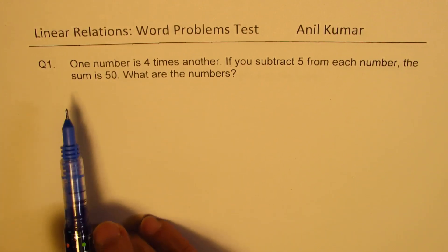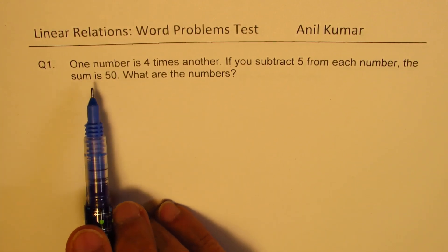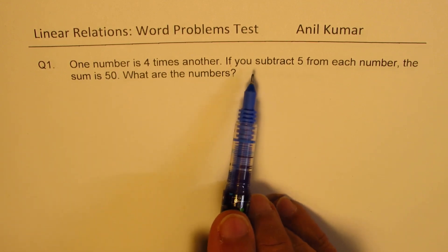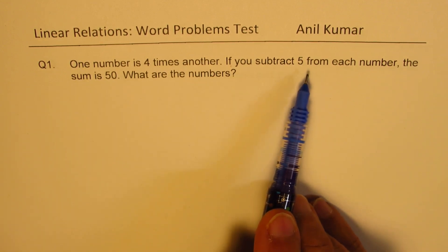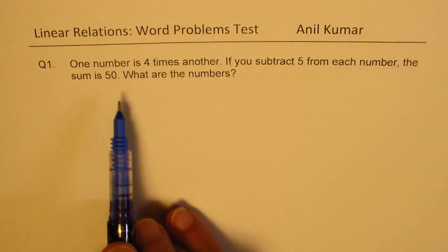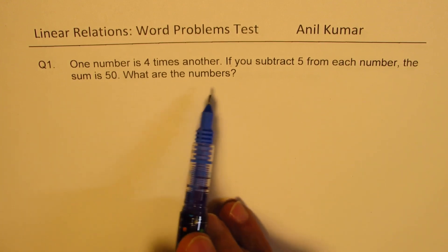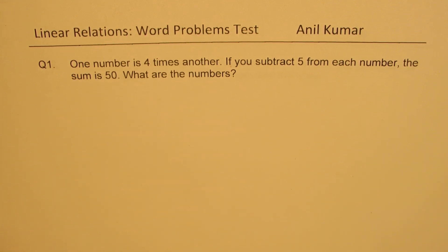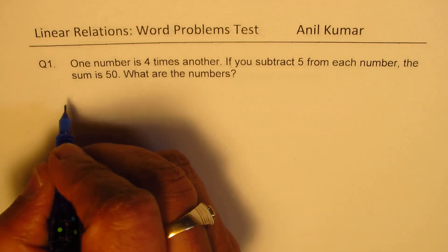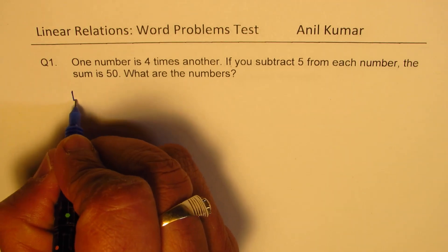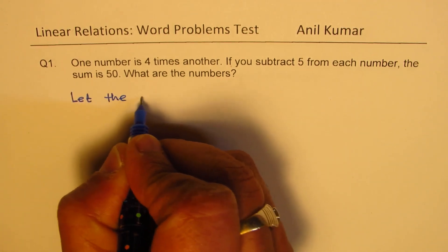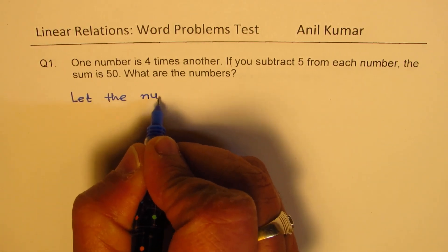Question number one: one number is four times another. If you subtract five from each number, the sum is 50. What are the numbers? So we're talking about one number — so let it be x. We say: let the number be x.